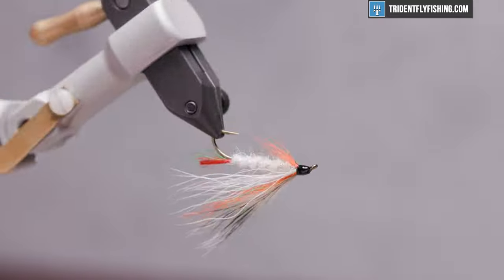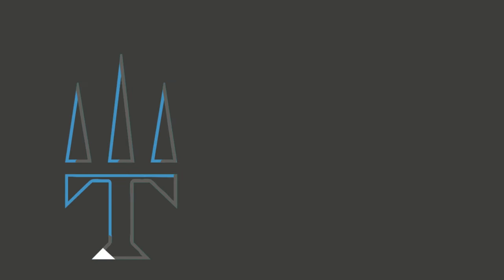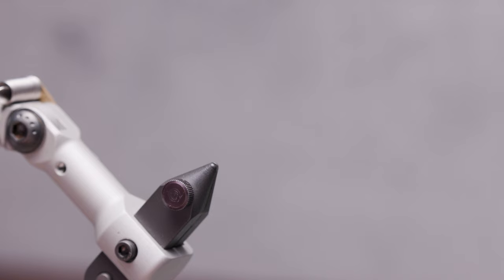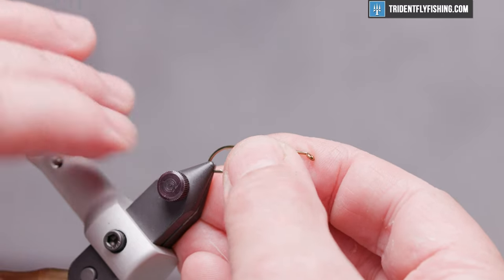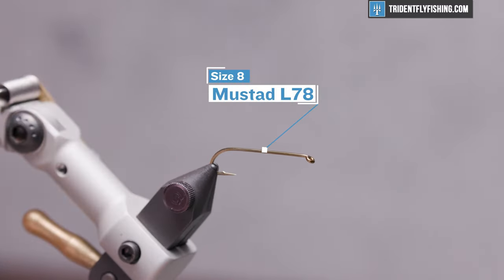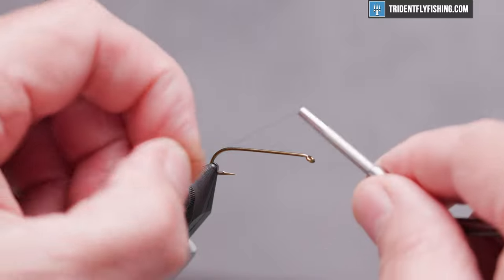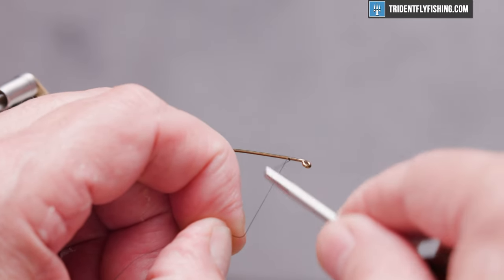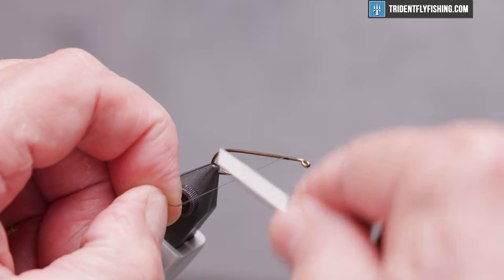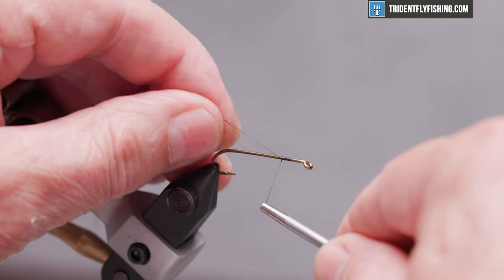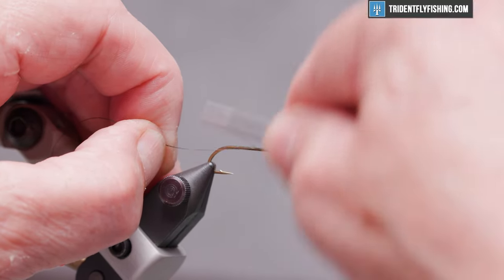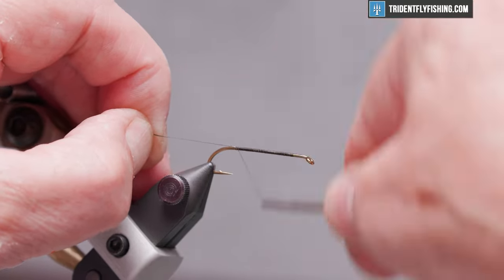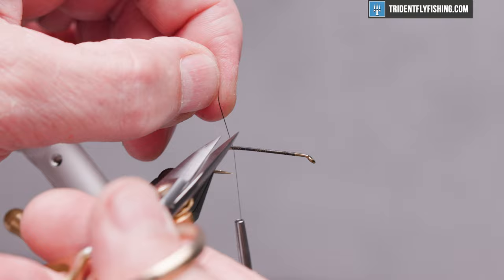Here's a completed fly in the vise. So this hook is a Mustad L78, which is a three extra heavy, seven extra long, and the thread we're going to use today is Vivas GSP 50D in black. We'll start with the thread about an eye length and a half behind the hook eye and lay down a thread base all the way back to the bend of the hook. Cut off our excess.